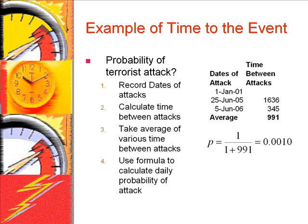For example, suppose we want to know what is the probability of a terrorist attack in a city. To calculate this probability, we need only to record the dates of the last attacks in the city and the average time between the attacks. This average time between reoccurrences of the event can be used to estimate the probability of another attack.